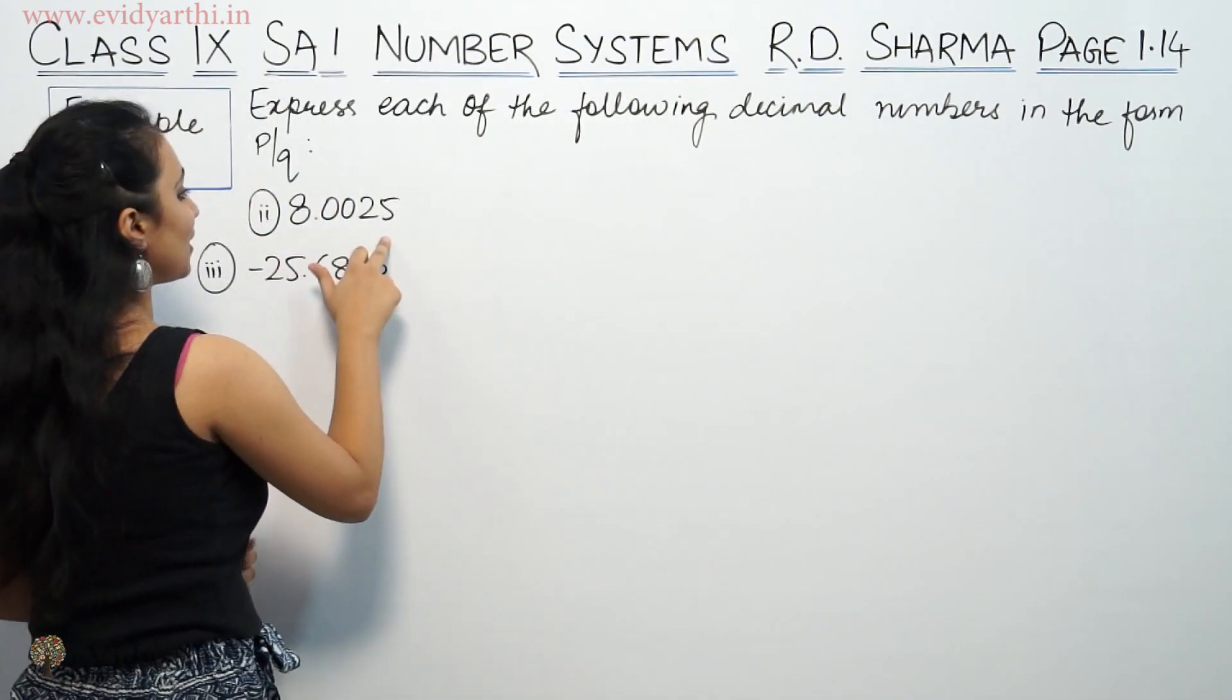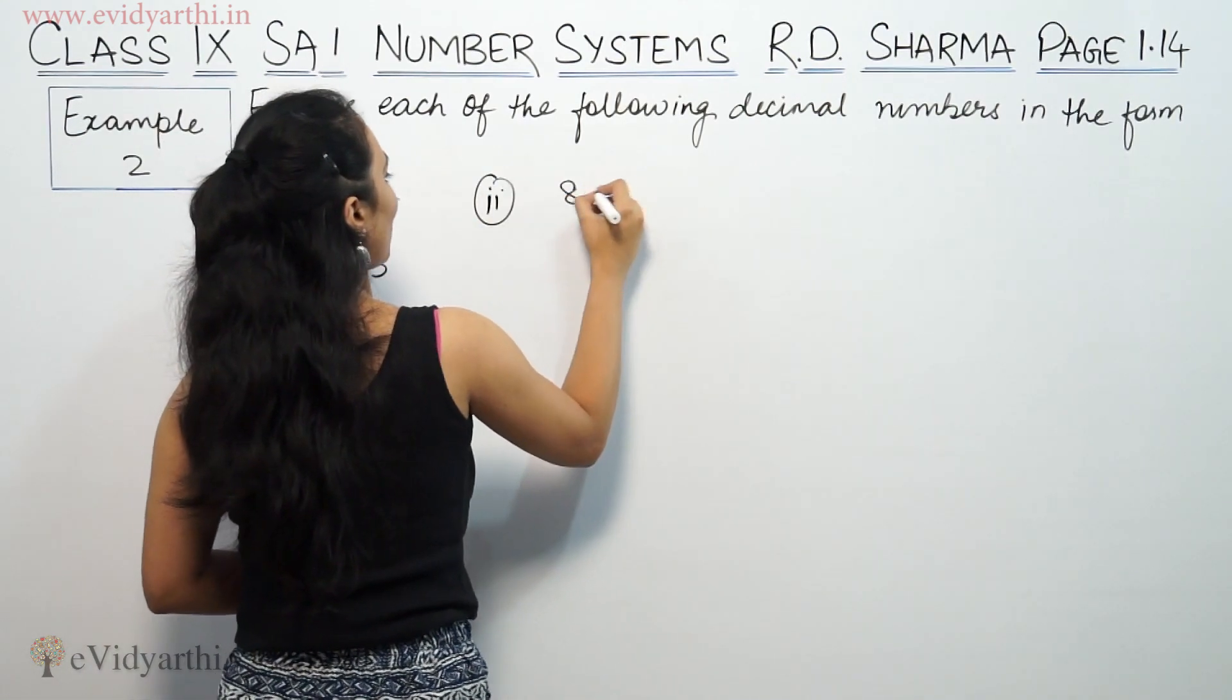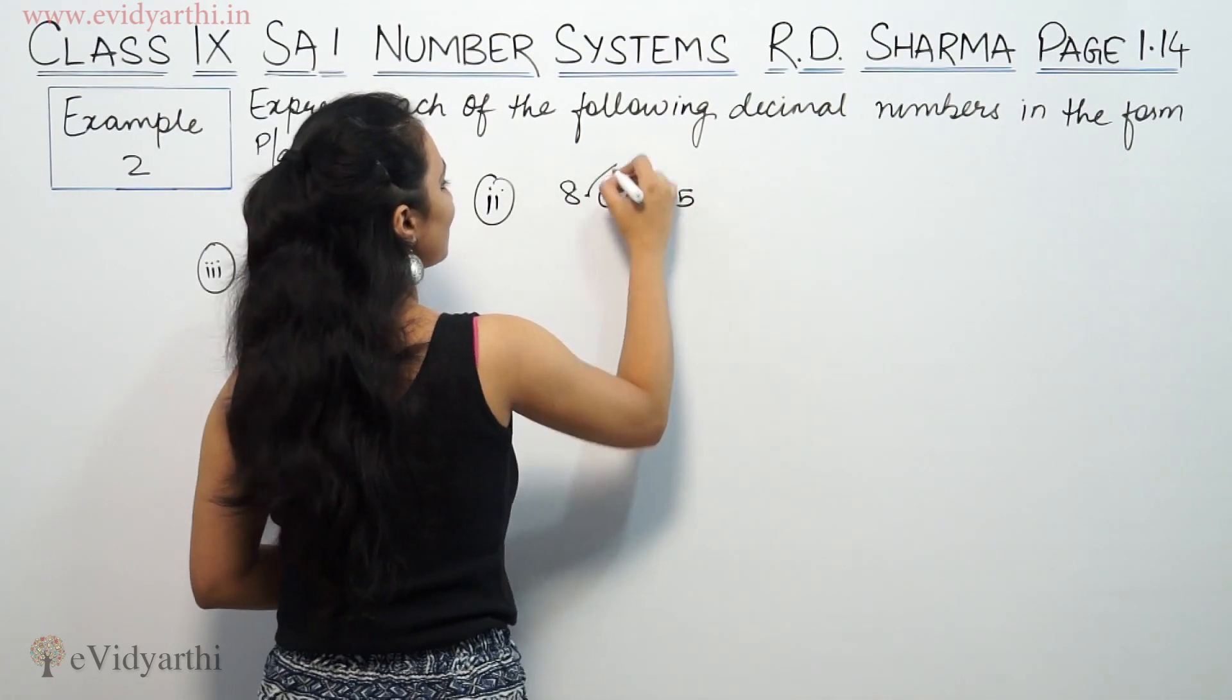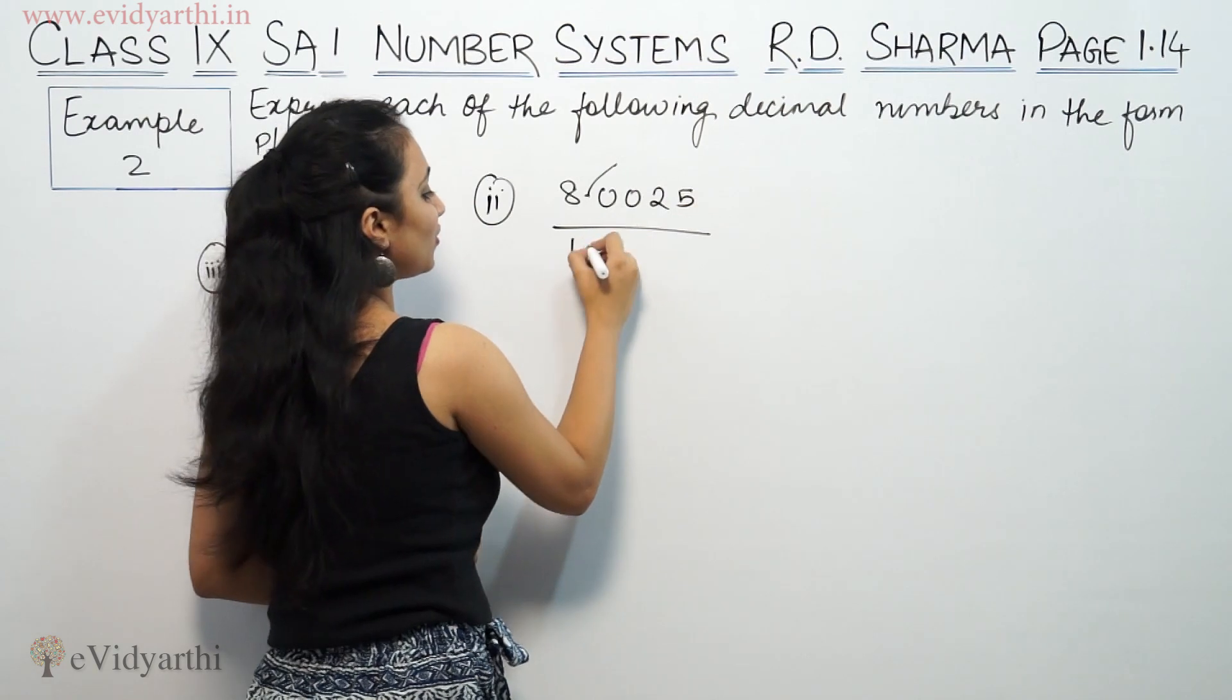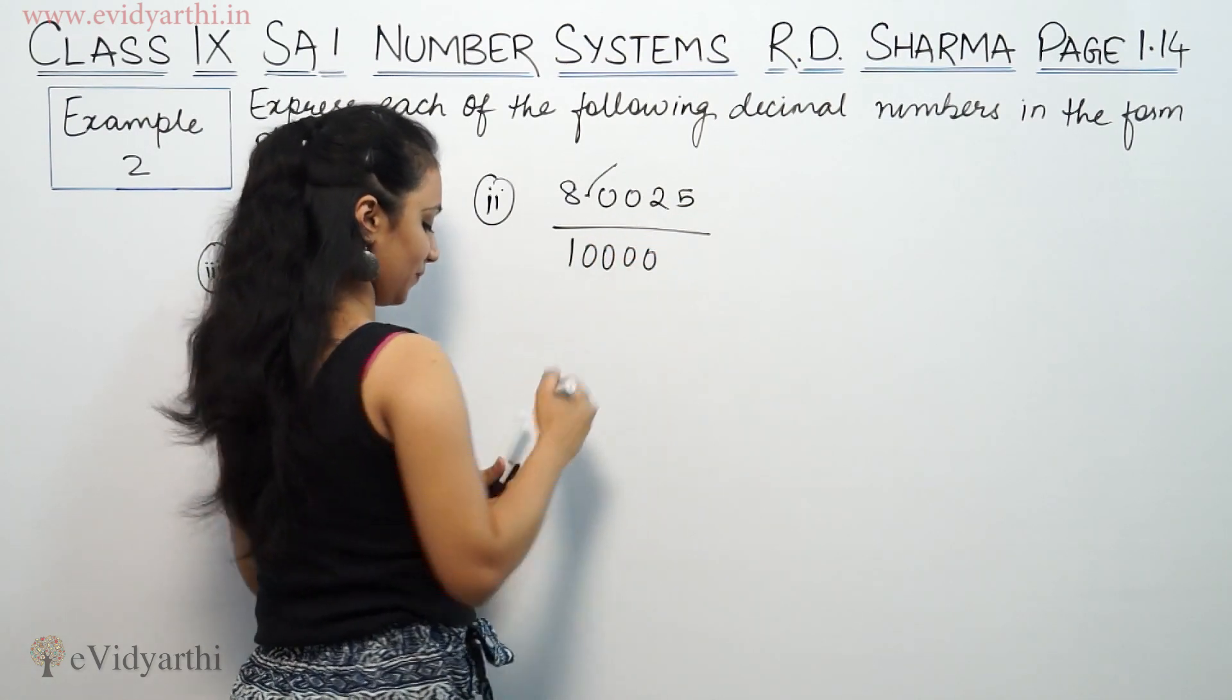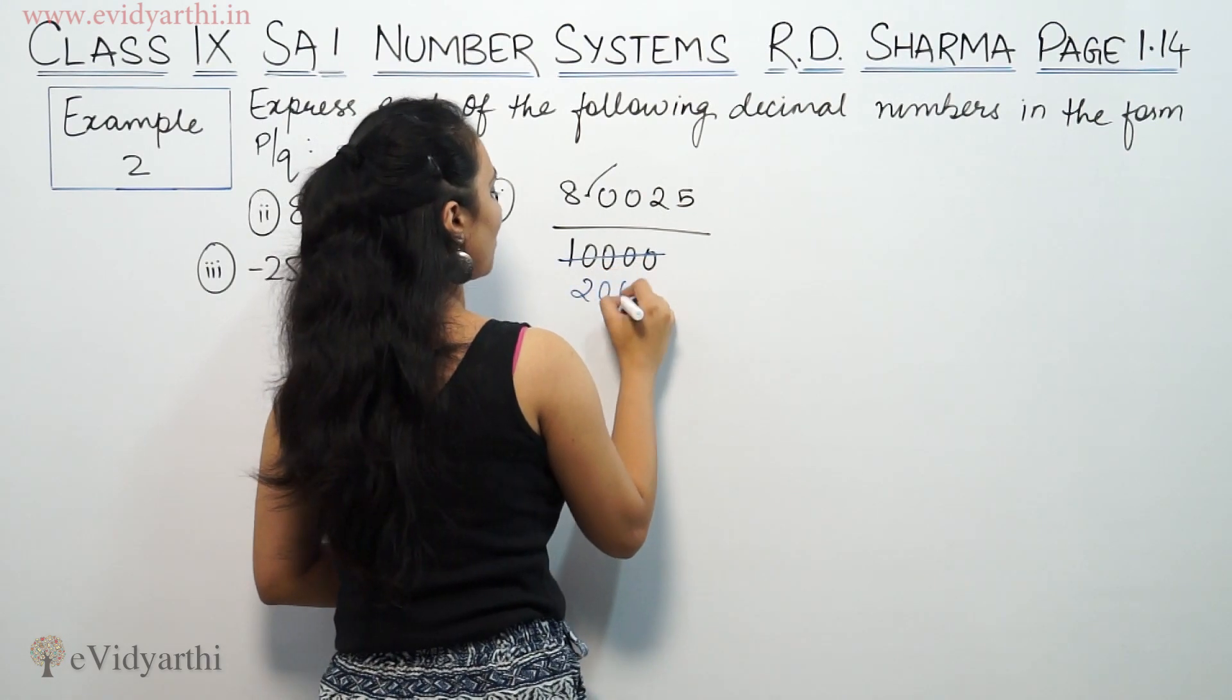This is 8.0025. So, 8.0025. If we remove the decimal, we have 4 digits: 1, 2, 3, 4. So we have zeroes, so we'll cut. So this is 5, 2's a 0, 0, 0.